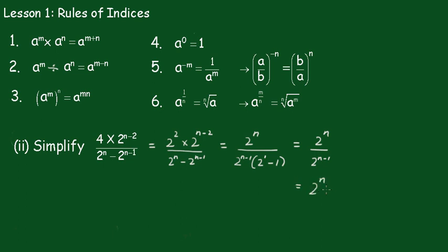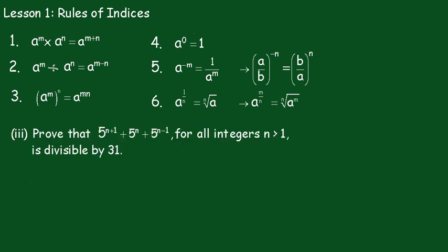So, that's 2 to the n divided by 2 to the n minus 1. We'll subtract those indices: n minus (n minus 1). And we just simply get the result of 2.